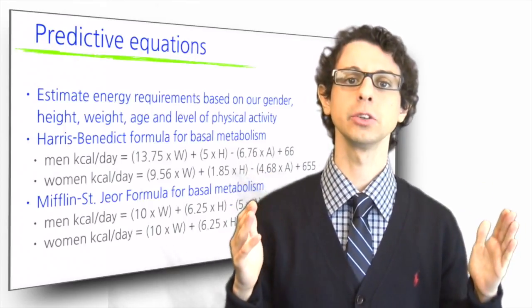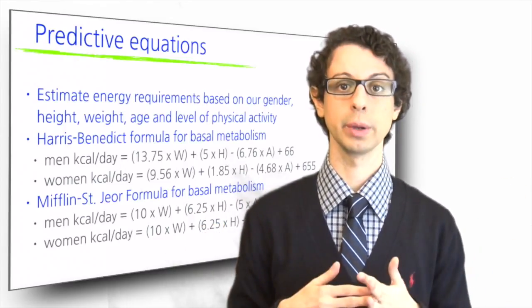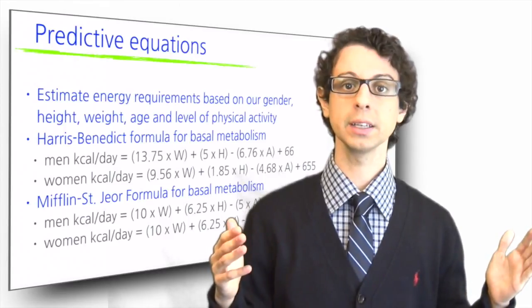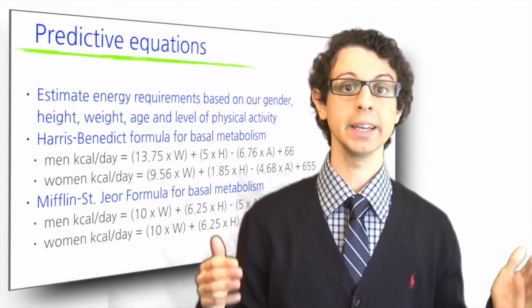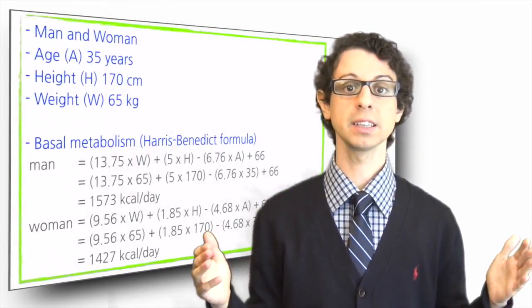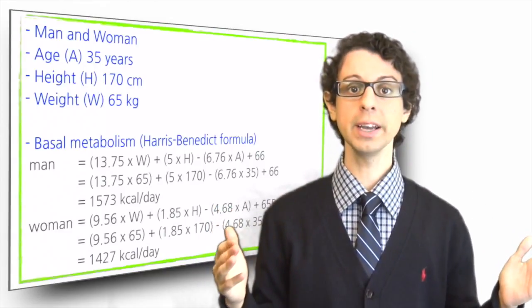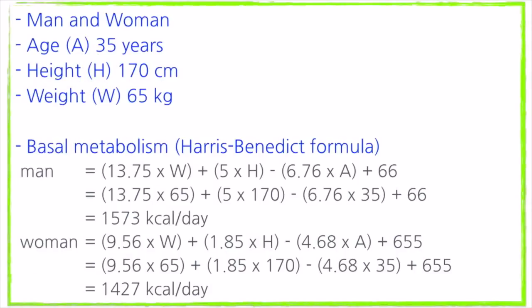The first thing we need to do is estimate basal metabolism using these two equations, one for men and the other for women. W is the weight in kilograms, H is the height in centimeters, and A is the age in years. Suppose we have a man and a woman of 35 years of age, 170 cm tall and weighing 65 kg. We substitute these values in the equations to obtain for the men: 13.75 × 65 kg plus 5 × 170 cm minus 6.76 × 35 years of age plus 66 equals 1573 calories per day.